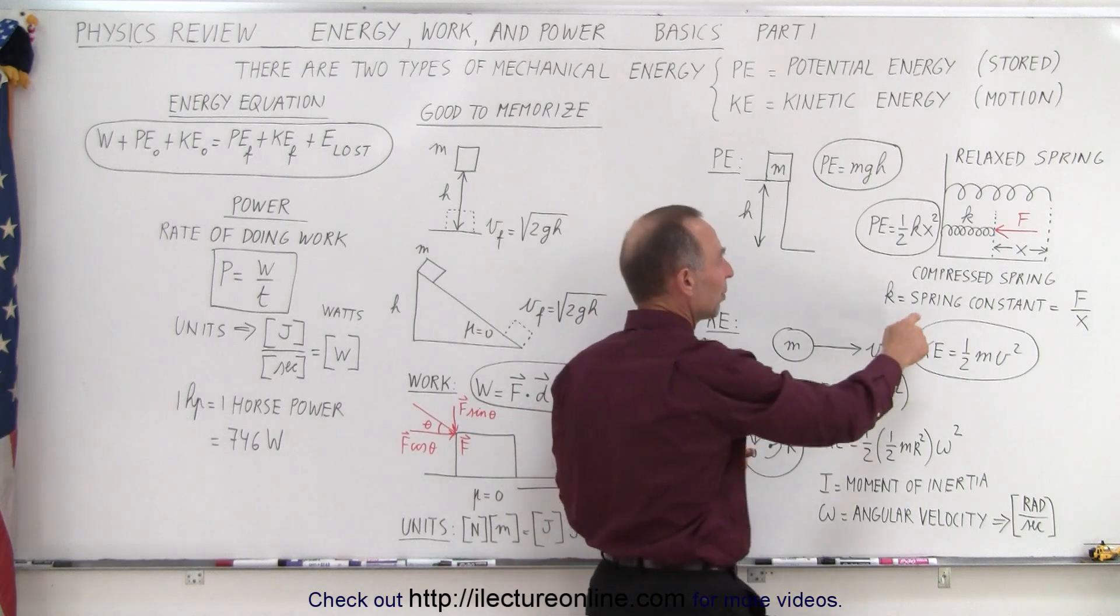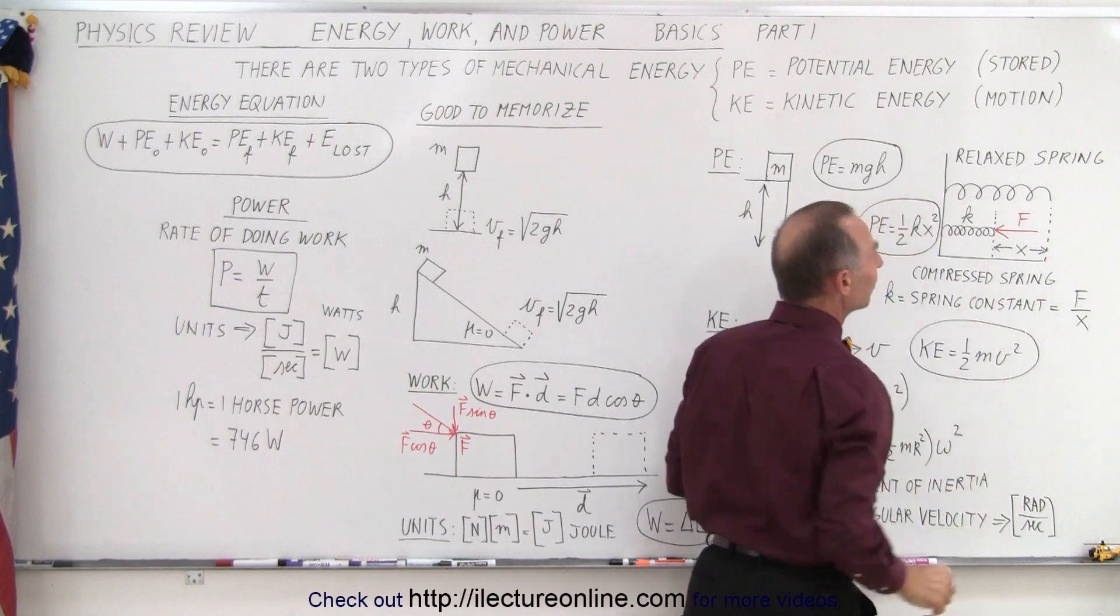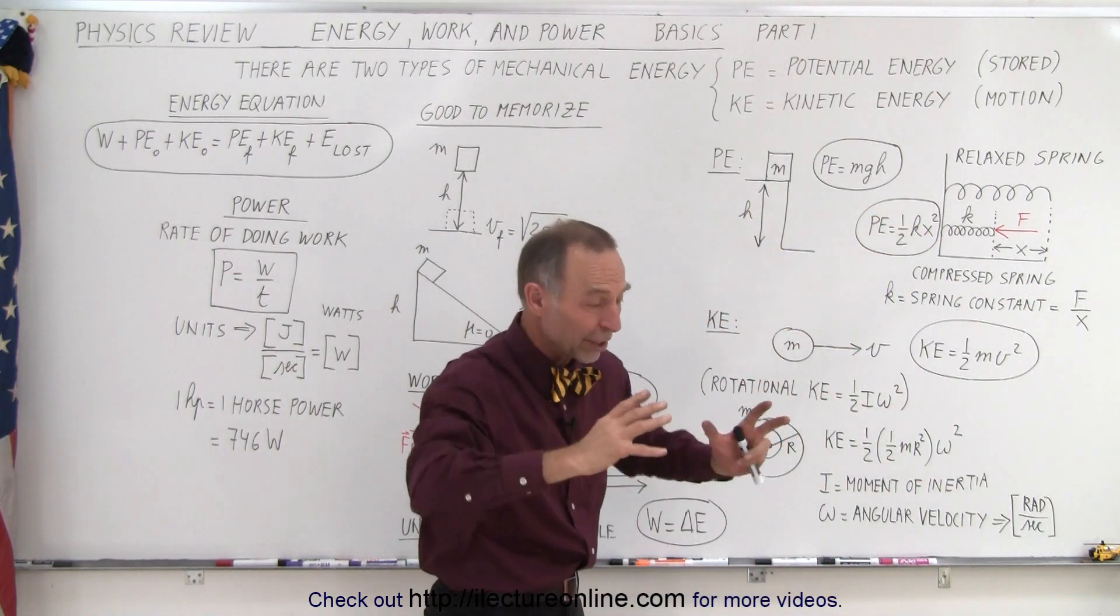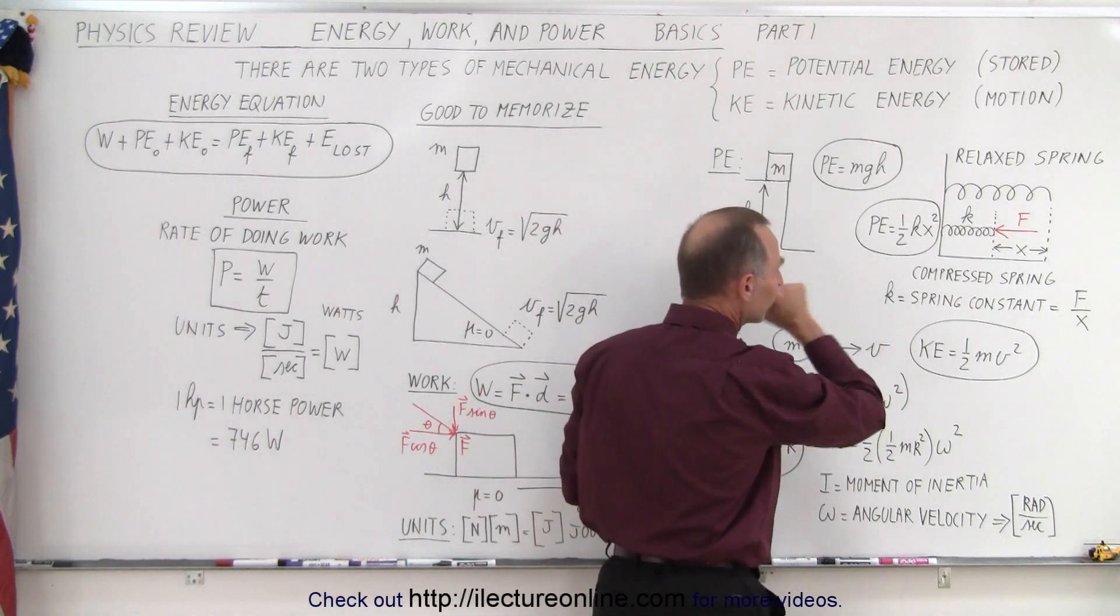A spring is known to have what we call a spring constant. By definition, the spring constant is equal to the ratio of the force applied on the spring and how far we compress it. That ratio is known as the spring constant. The stronger the spring, the more force you need to compress it, the bigger the spring constant.